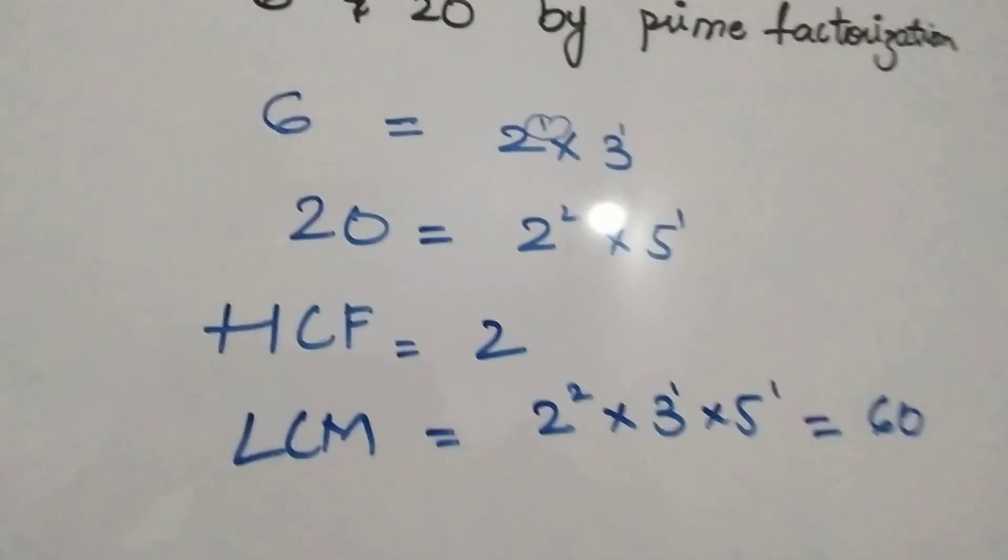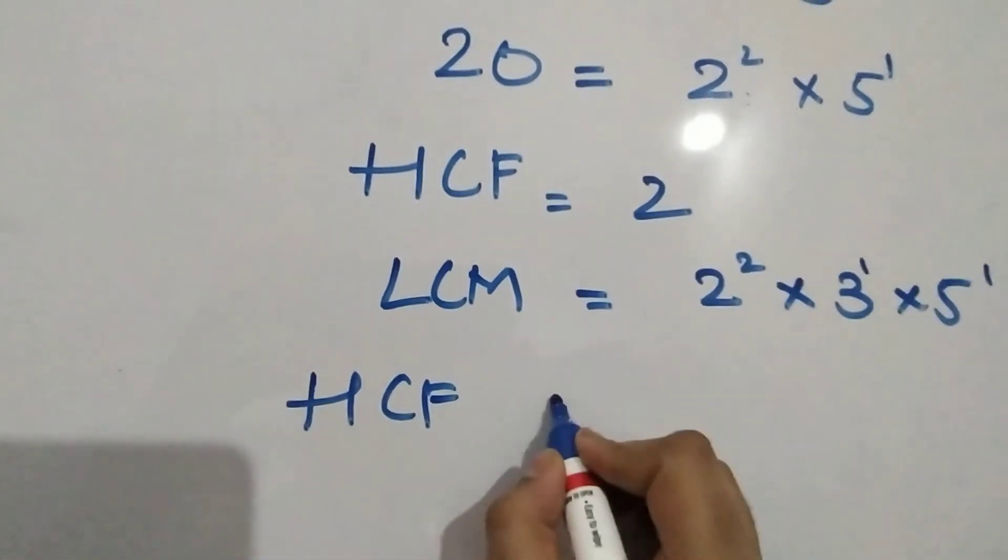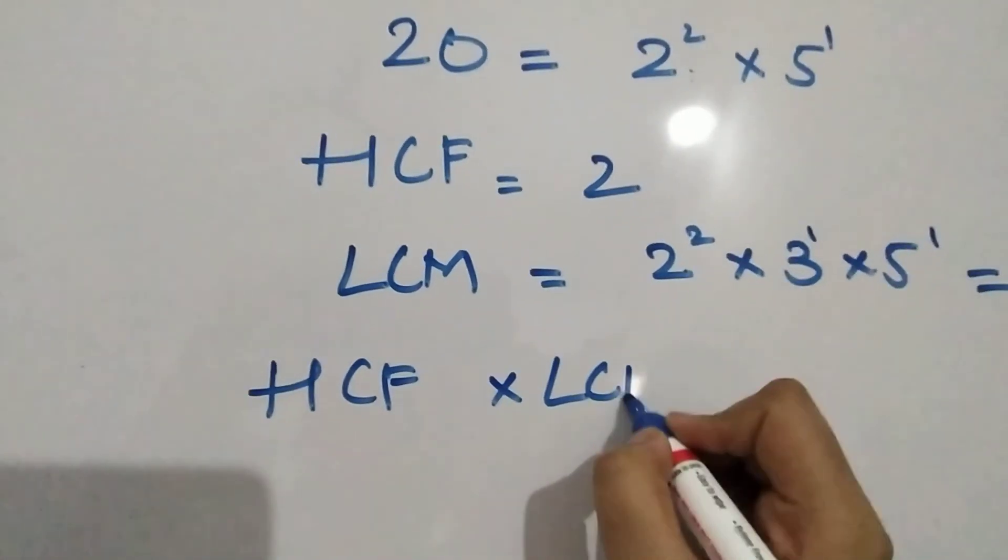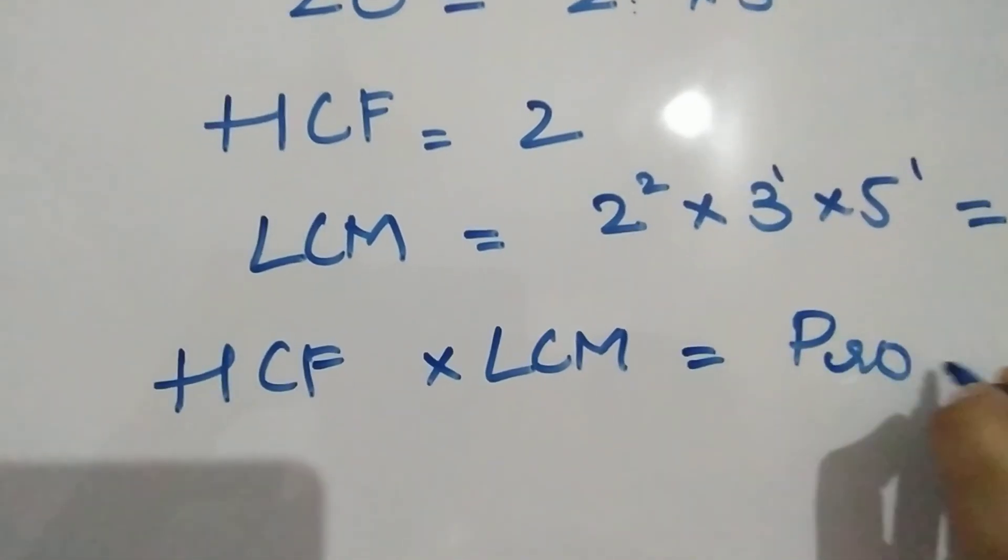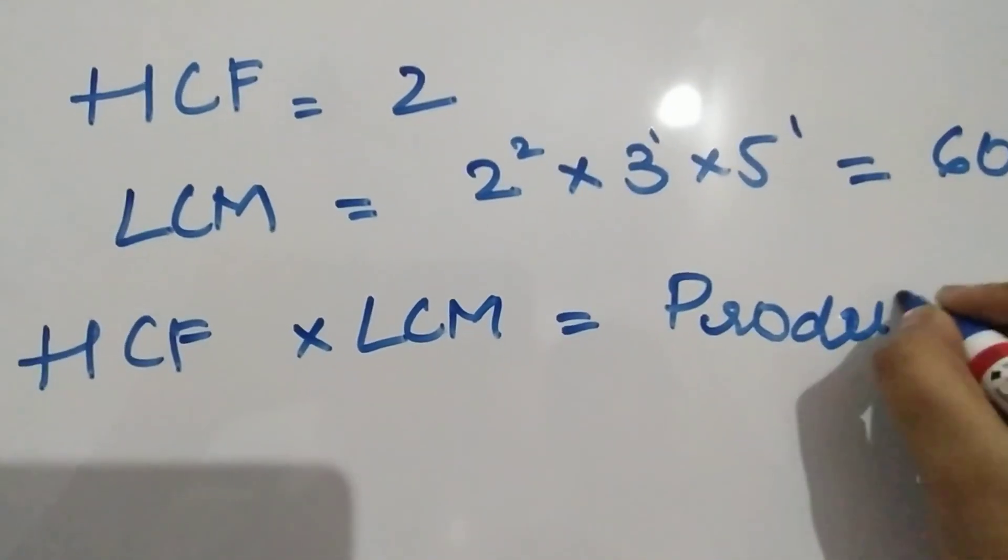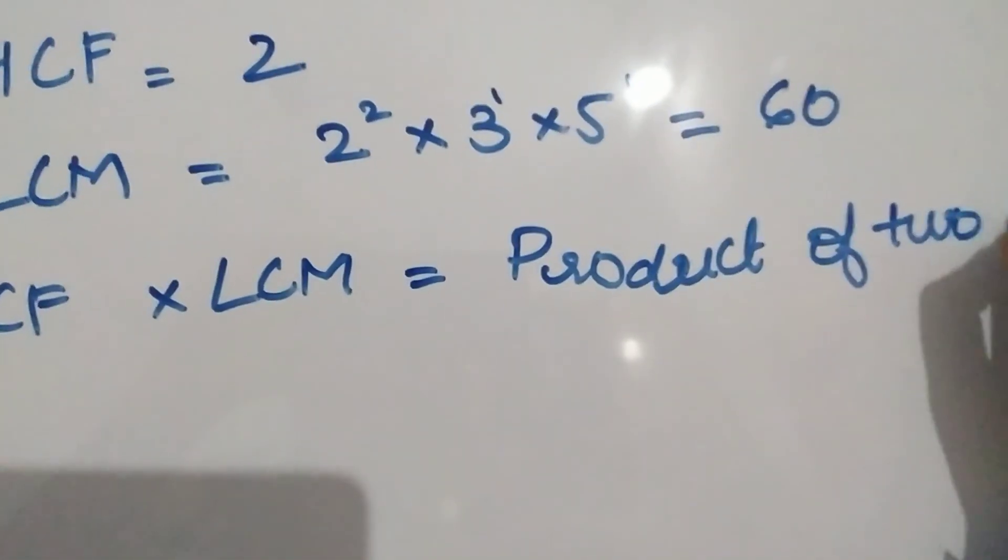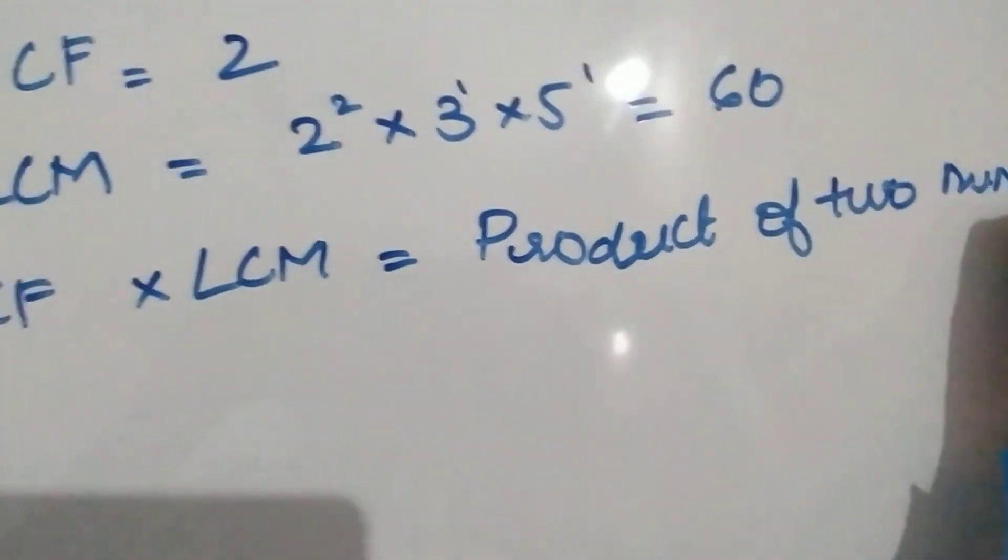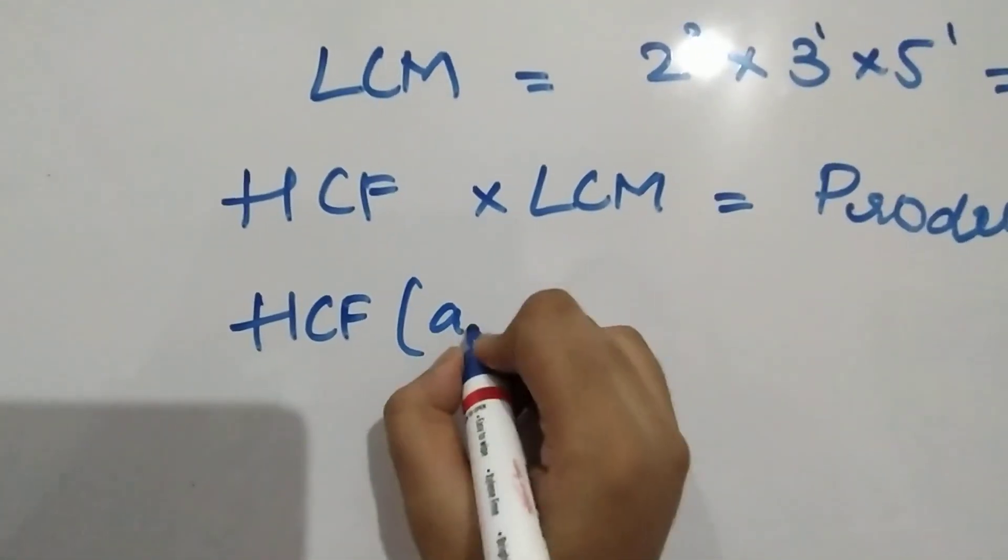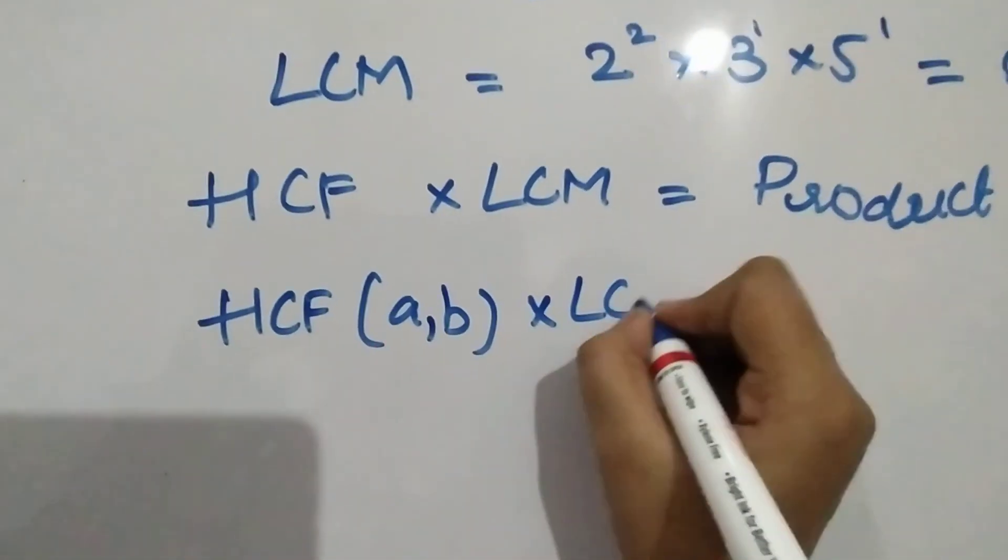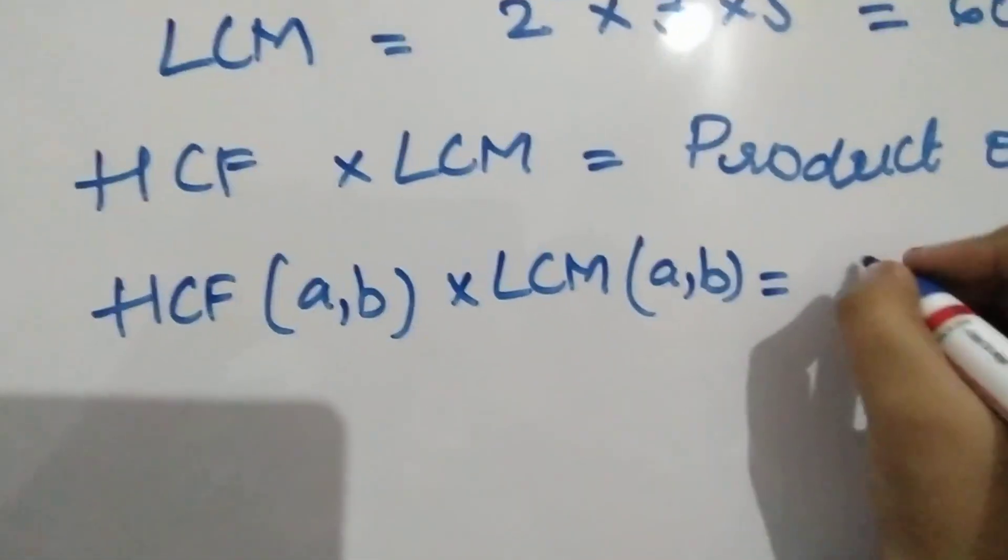So we can get an interesting result here that is HCF into LCM of 2 numbers is equal to product of the 2 numbers. HCF of A and B times LCM of A and B is equal to A into B itself.